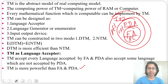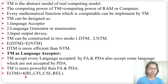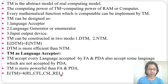Turing machine is more powerful than FA and PDA since it is a superset of FA and PDA. The expressive power of Turing machine is four, as it can accept regular language, context-free language, context-sensitive language, and recursively enumerable language. The expressive power of finite automata is one, PDA is two, LBA is three, and Turing machine is four — it accepts all these languages.